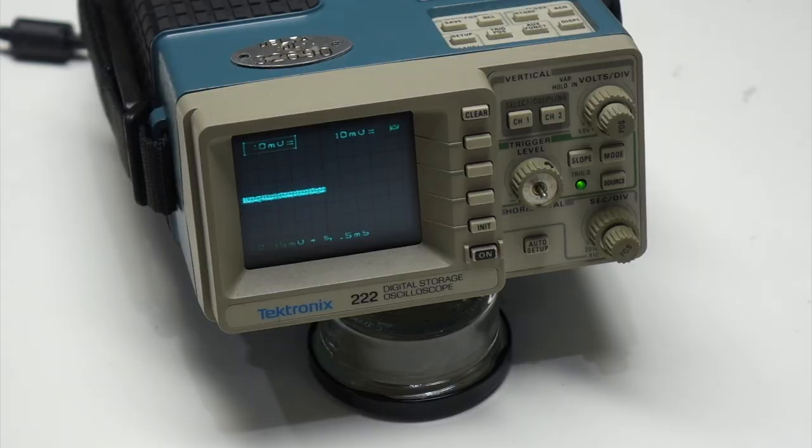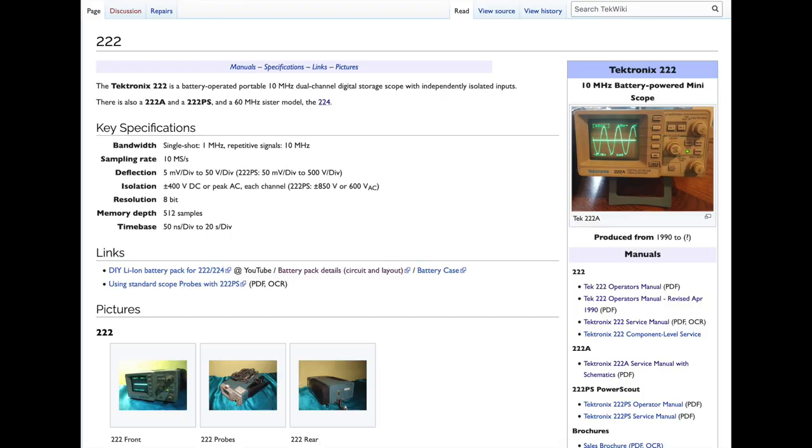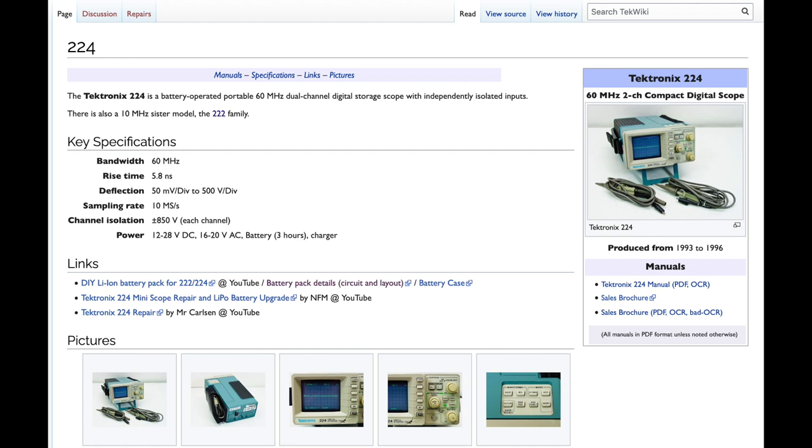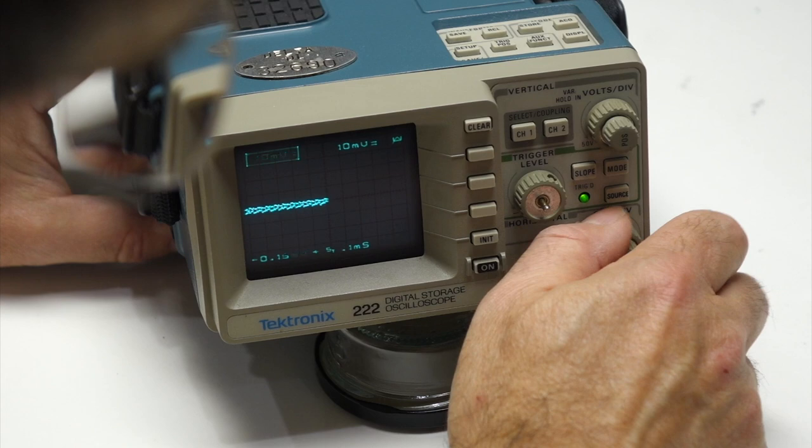Hello and welcome back! Our very cute Tektronix 222 scope comes to us from 1988. It is an early digital scope, albeit at only 10 MHz per channel. There is a later model, the Tekt 224, that will go up to 60 MHz. But both digitize at a relaxed pace of 10 mega samples per second, and on only 8 bits.